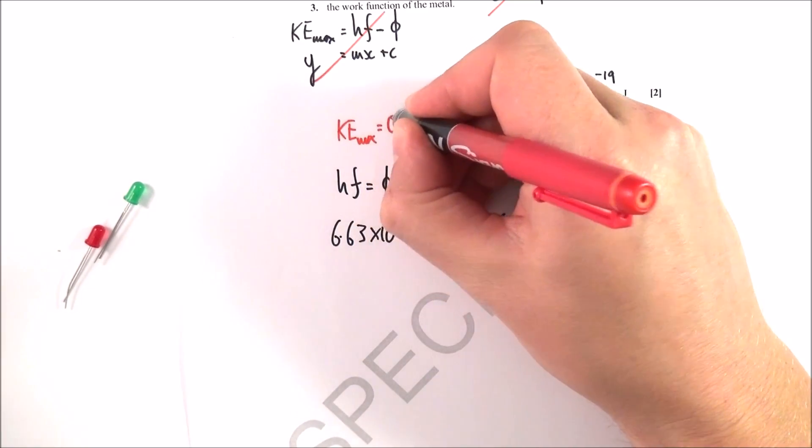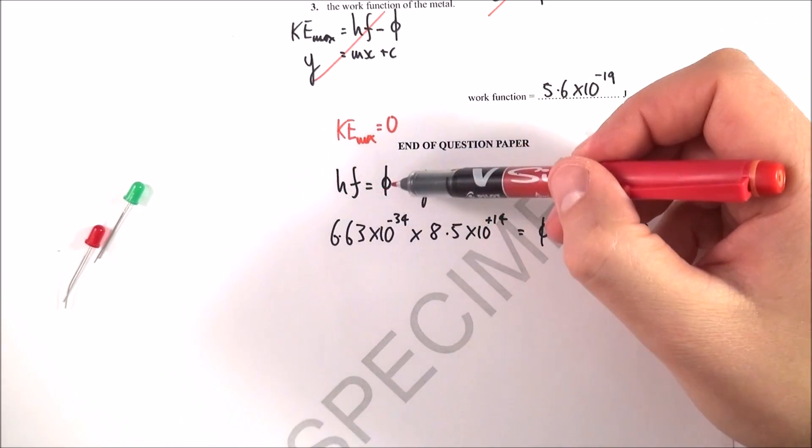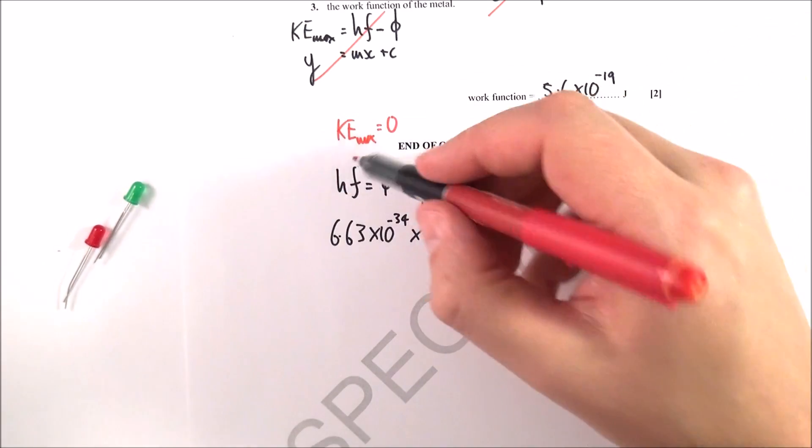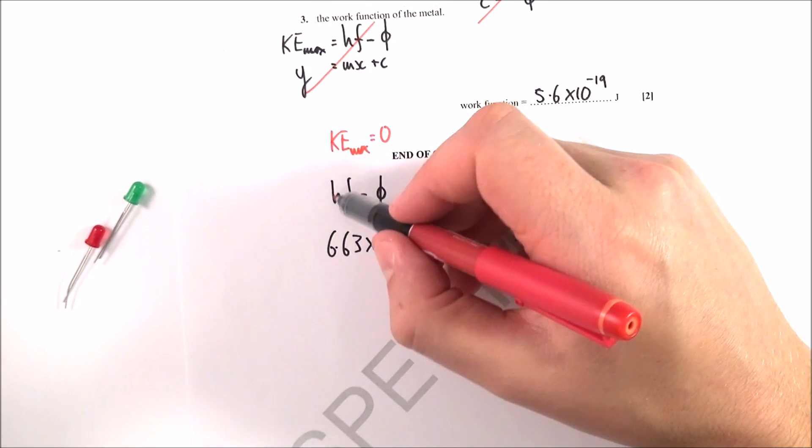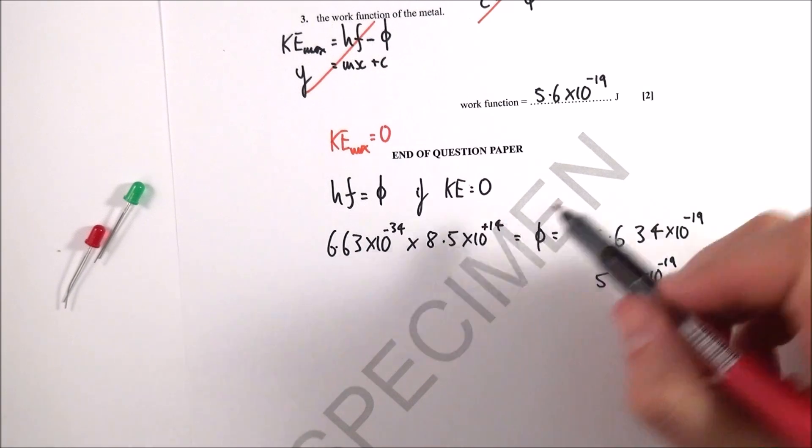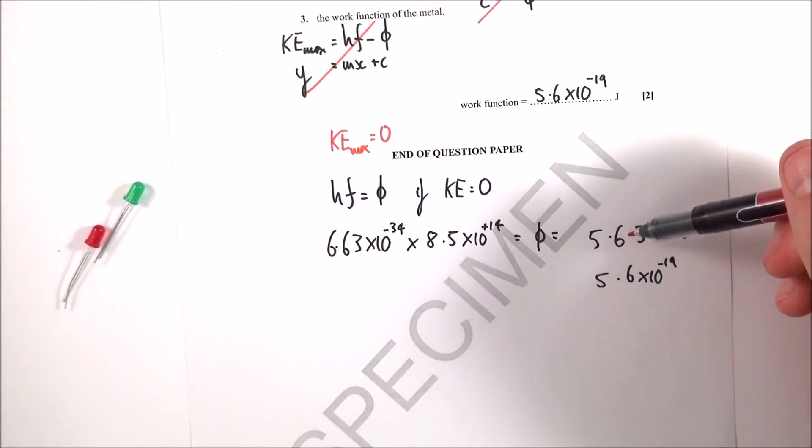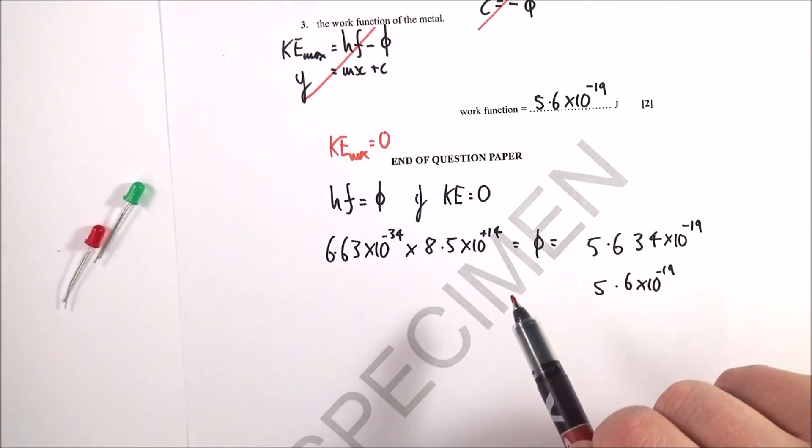We know that hf equals phi. We've just worked out f in the last question. We know Planck's constant because that's given to us in our data book. Therefore we can just multiply h times f to get our value of phi, which is 5.634 times 10 to the minus 19. I've given it there as 5.6 times 10 to the minus 19 joules, and that's about an appropriate number - it's about three electron volts.